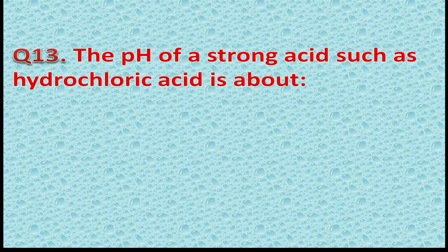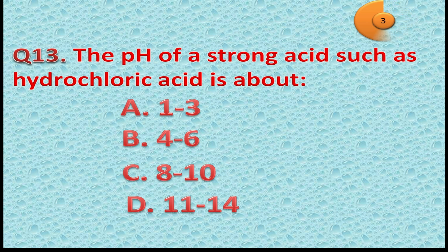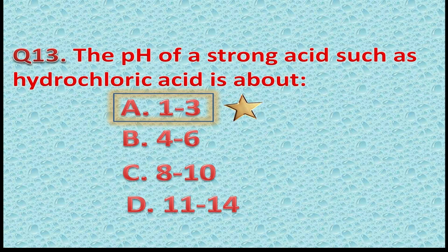Question 13: The pH of a strong acid such as hydrochloric acid is — Option A: 1 to 3. Option B: 4 to 6. Option C: 8 to 10. Option D: 11 to 14. The correct answer is Option A — 1 to 3. You got one more point for this correct answer; for a wrong answer you got nothing.